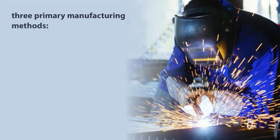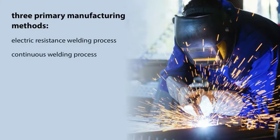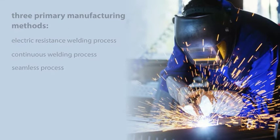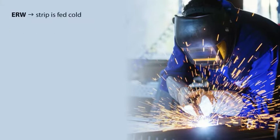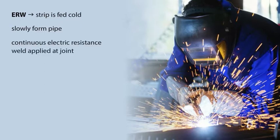There are three primary manufacturing methods for steel pipe: the electric resistance welding process, the continuous welding process, and the seamless process. In the ERW process, the strip is fed cold and unheated toward rolls that slowly form the pipe into an oval and then a precision cylinder, and a continuous electric resistance weld is applied at the joint.